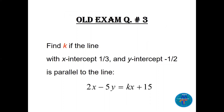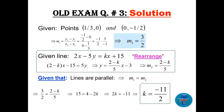Question 3 is a nice question. Find k if the line with x-intercept 1/3 and y-intercept −1/2 is parallel to the given line. Two parallel lines have the same slope. The x-intercept (1/3, 0) and y-intercept (0, −1/2) are our two points. Slope m1 = (−1/2 − 0)/(0 − 1/3). Dividing the two fractions carefully gives m1 = 3/2.